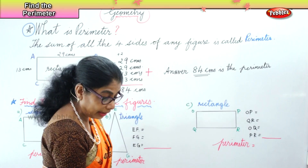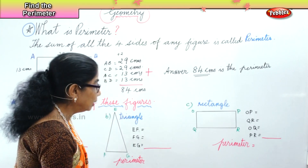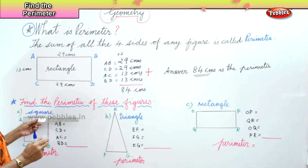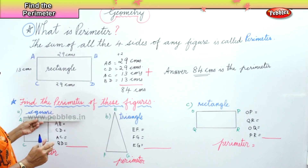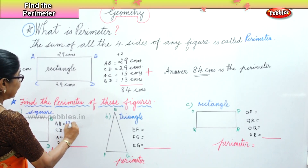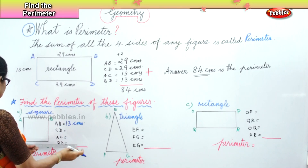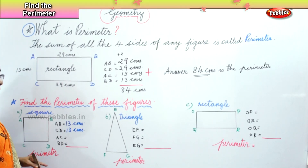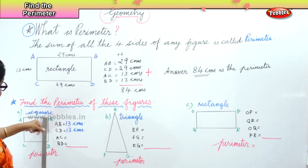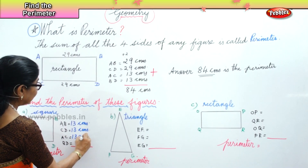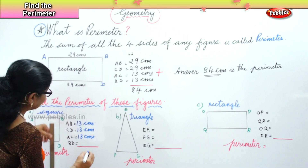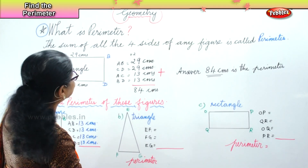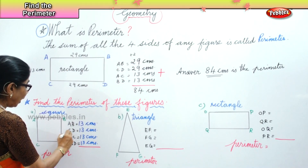Now let's measure. We will take the ruler and put the zero on the point. For the square, put zero on point A and at point B you have 13 — 13 centimetres. Then we measure CD: again 13 centimetres. BD is also 13 centimetres. All sides of a square are equal. Now to find the perimeter — the sum of all the sides — we need to add all of these.